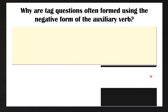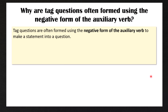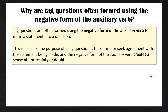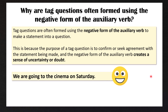So why are tag questions often formed using the negative form of the auxiliary verb? Tag questions are often formed using the negative form of the auxiliary verb because the purpose of a tag question is to confirm or seek agreement with the statement being made. By using the negative form it creates a sense of uncertainty or doubt. So if I say 'We are going to the cinema on Saturday' — that is a declarative sentence, a factual statement about what is happening.